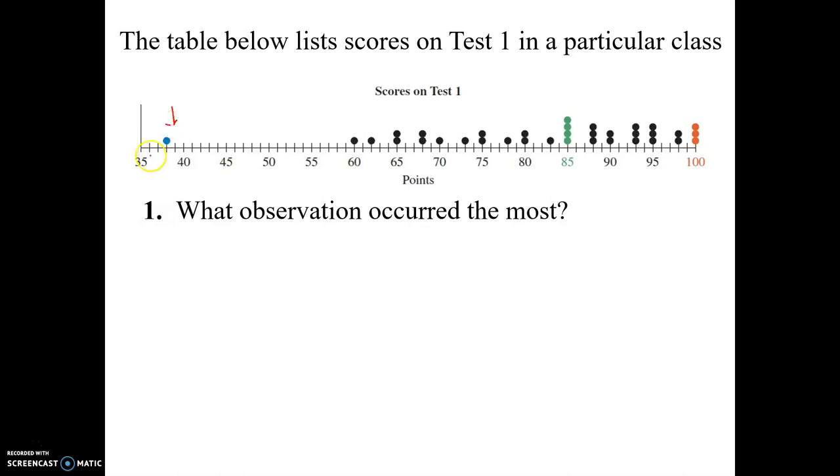So here's what these little dots mean. This little dot here, this is 36, 37, 38. This means somebody got a 38% on the exam. This here is 60%. This means somebody got a 60% on the exam. So every time a score is recorded, you put a dot on that particular score. So 65, it looks like two people got a 65%.